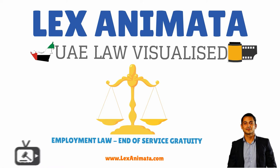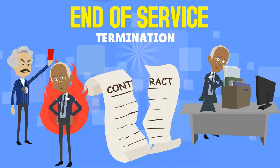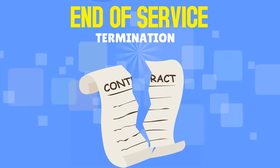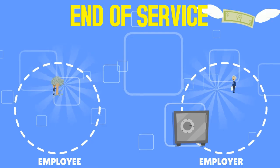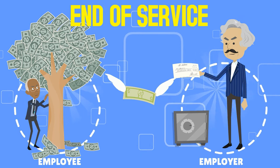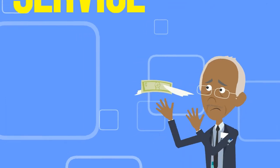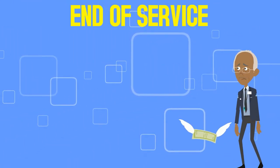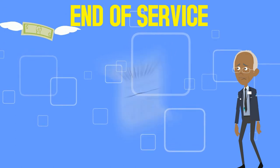End-of-service gratuity visualized: once an employment contract is terminated, whether the employee resigned or was fired by the employer, the employee is entitled to what is called end-of-service gratuity — an amount of money that the employer must pay to the employee after the end of employment, for the period spent working with the company. However, this payment is subject to certain conditions related to the type of contract, whether permanent or fixed term, and how many years the employee worked.